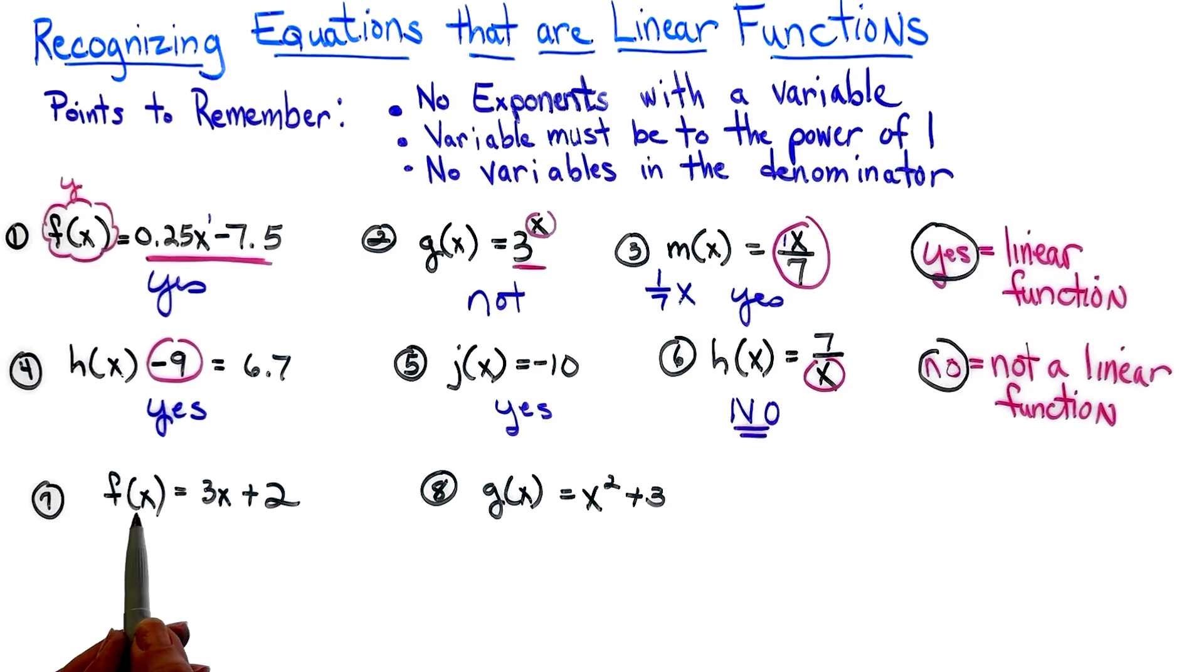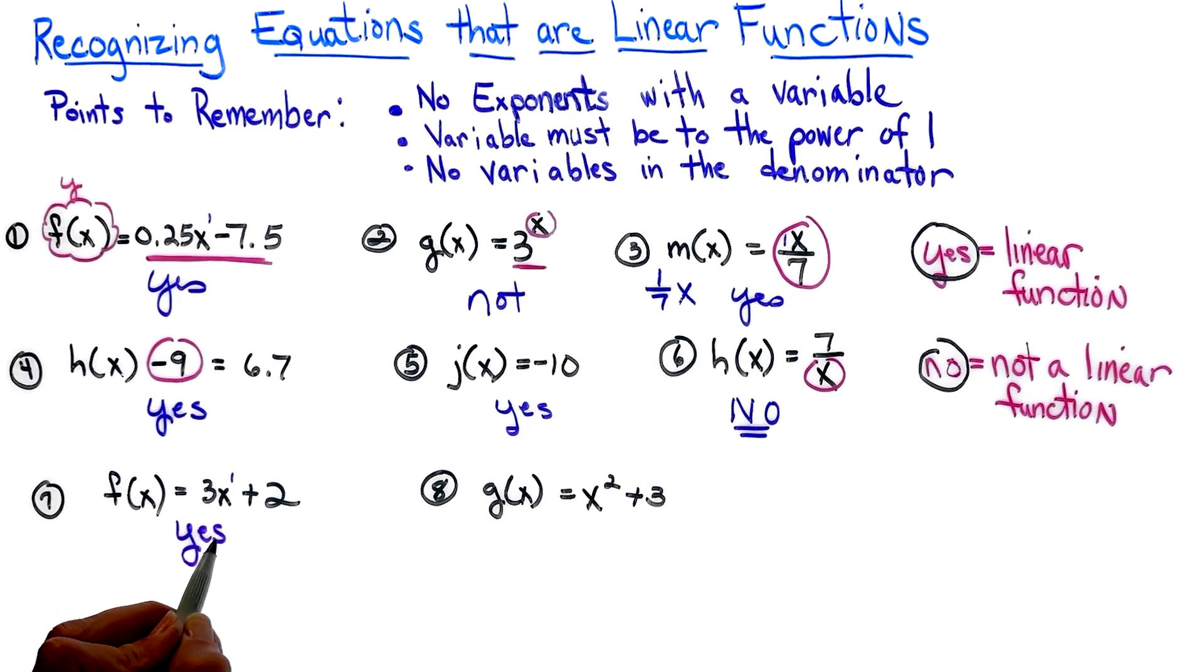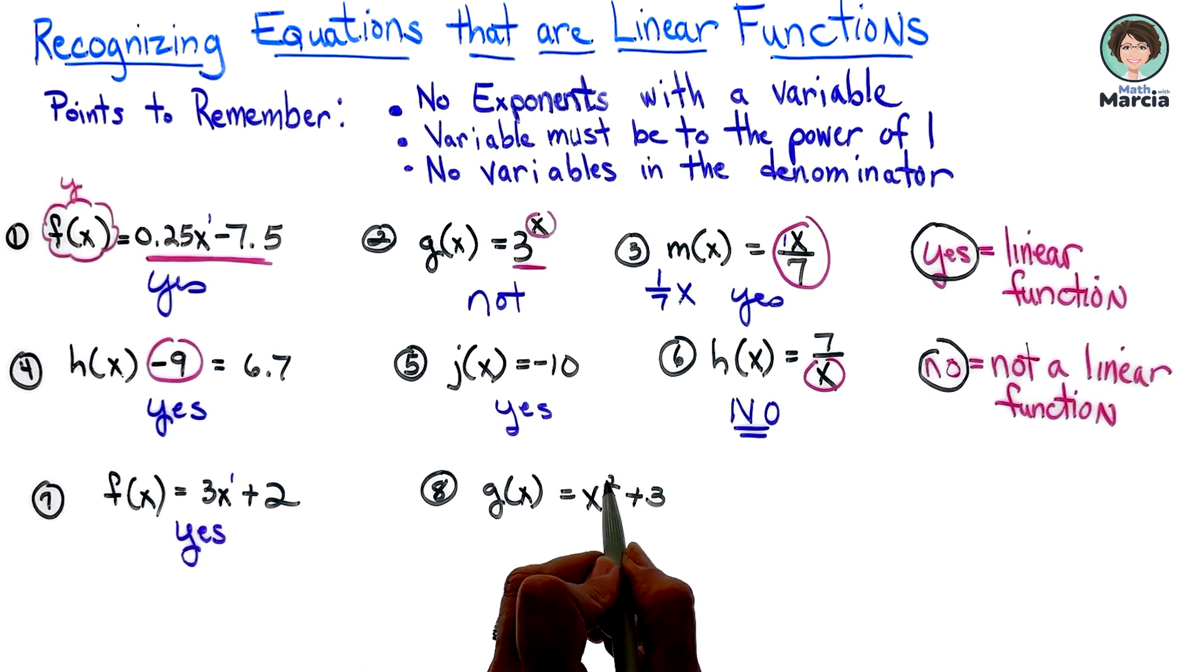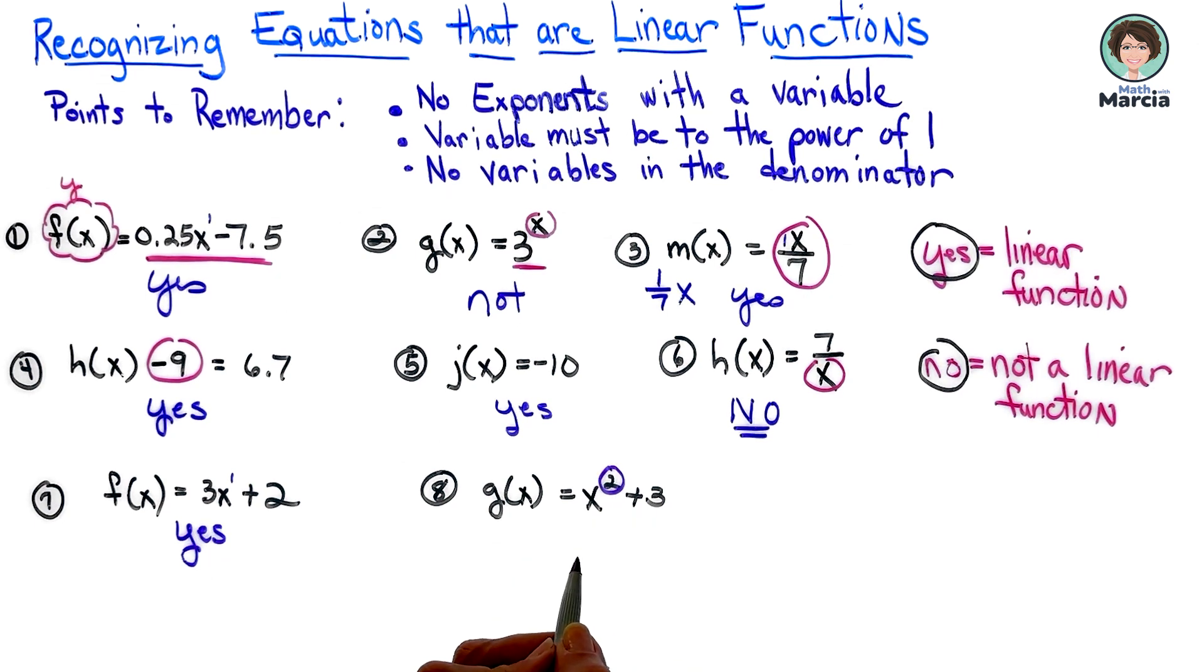With number seven, we have f(x) = 3x + 2. I see that indeed I just have an x to the first power, so this is a linear function. And now, while this is a function, because of the x², it is not a linear function. This would be considered a quadratic.